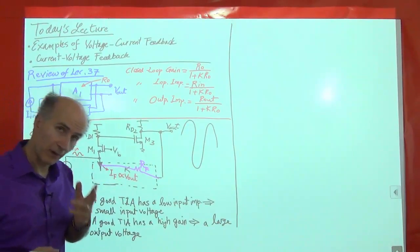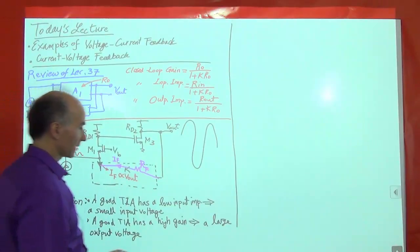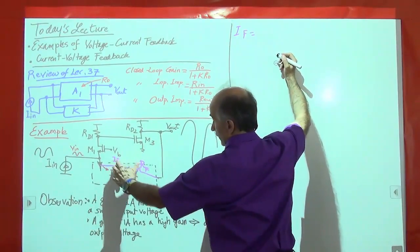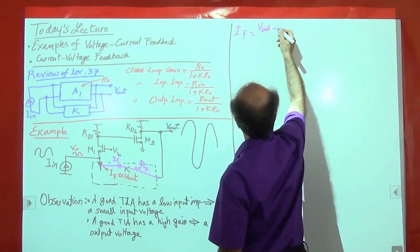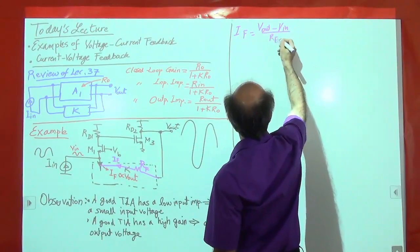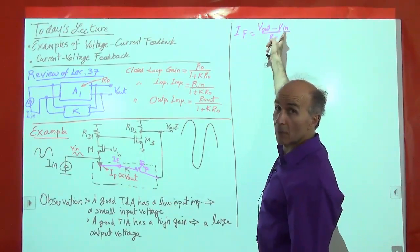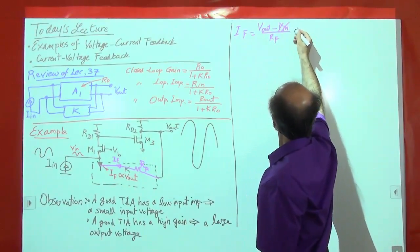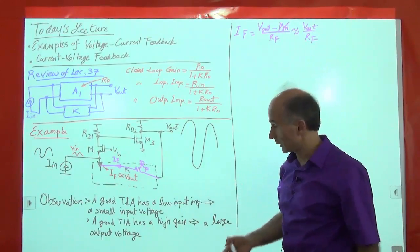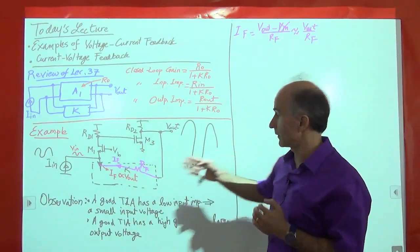Why? Let's find the current through RF. IF equals this voltage minus this voltage divided by this resistance — so Vout minus Vin divided by RF. Now we go back to our observation: Vout is large, Vin is small. So I can neglect Vin and say this is approximately equal to Vout over RF. That's what the feedback network is supposed to do — generate a current proportional to the output voltage. This resistor does that job.